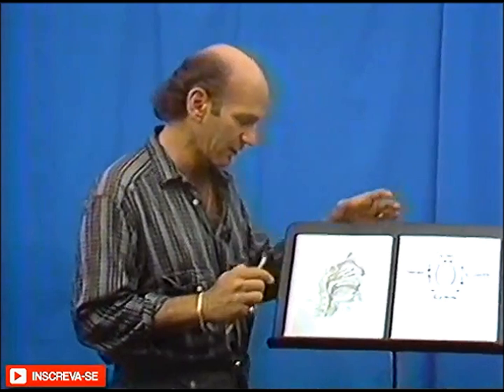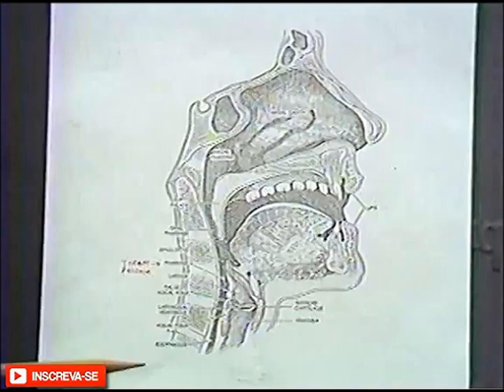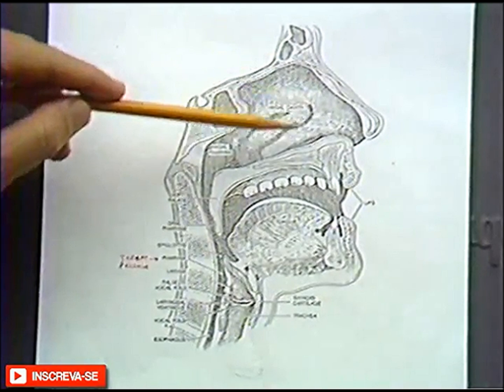The area we're concerned with is that part of the throat called the larynx, which is basically near the Adam's apple as far as we're able to identify it on the outside. If we look inside at a diagram, we see here a diagram from the side.